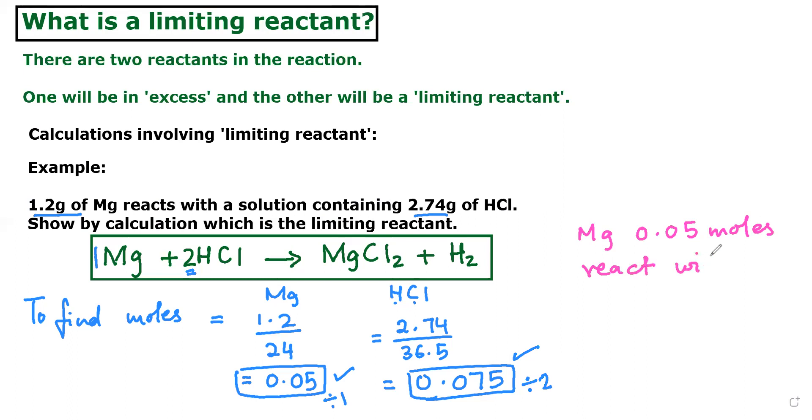So for magnesium you still have 0.05 moles. React with, react with what? When you do it, 0.075. Okay, so what do you do, divided by 2? How much do you get? 0.0375 moles of HCl, right? So it means now you see here which one you have less, whether 0.05 is less or 0.0375, because there are 2 moles, right?